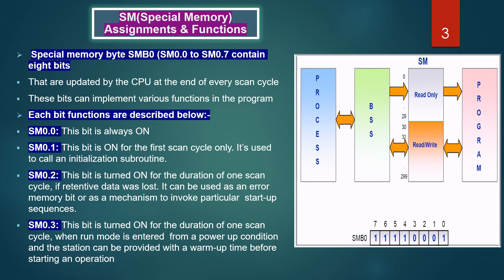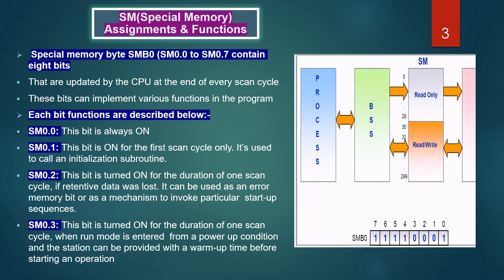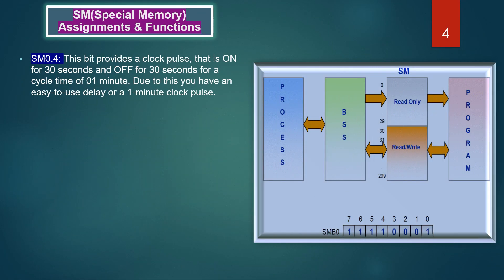SM 0.3: this bit is turned on for the duration of one scan cycle when run mode is entered from a power-up condition. That way, the station can be provided with a warm-up time before starting an operation. SM 0.4: this bit provides a clock pulse that is on for 30 seconds and off for 30 seconds, for a cycle time of one minute, giving you an easy-to-use delay or a one-minute clock pulse.